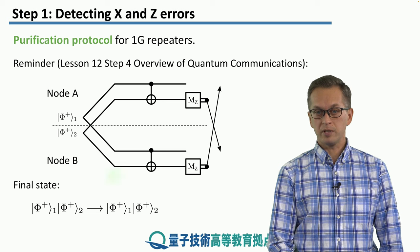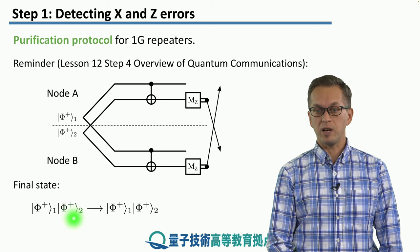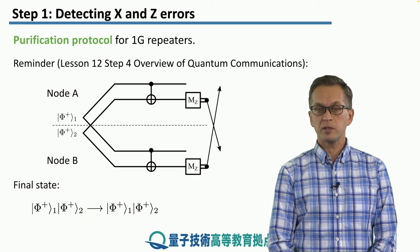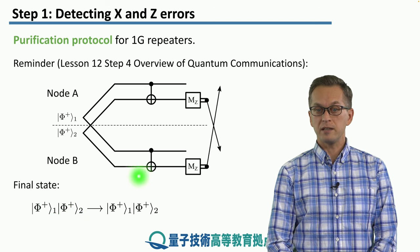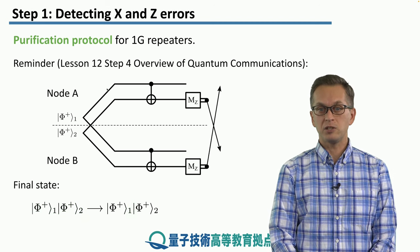For example, if our input is the ideal phi plus and phi plus for both pairs, then prior to measurement, the state is given by the following: phi plus, phi plus, it's unchanged.